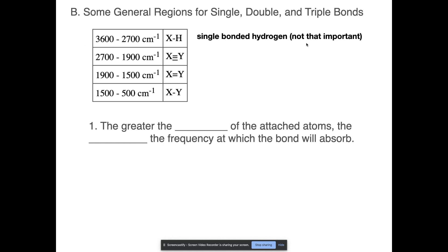Not that important for the most part when we're looking at the structure, but when we are looking at something that has a triple bond, that might be a little bit more useful to us. So that's between 2,700 and 1,900 inverse centimeters for triple bonds. Double bonds, that would be 1,900 to 1,500, and then 1,500 to 500, that would be like a single bond.